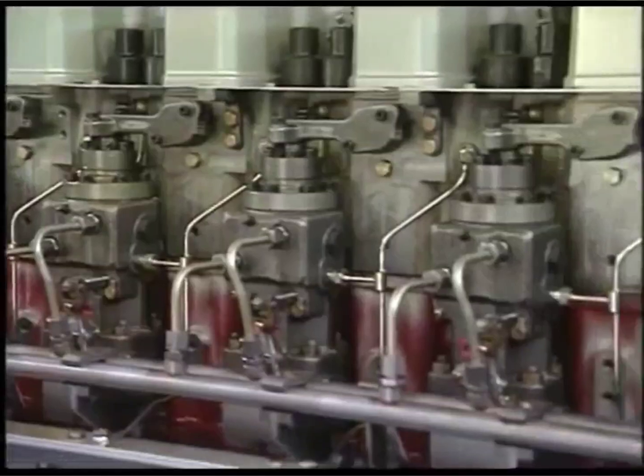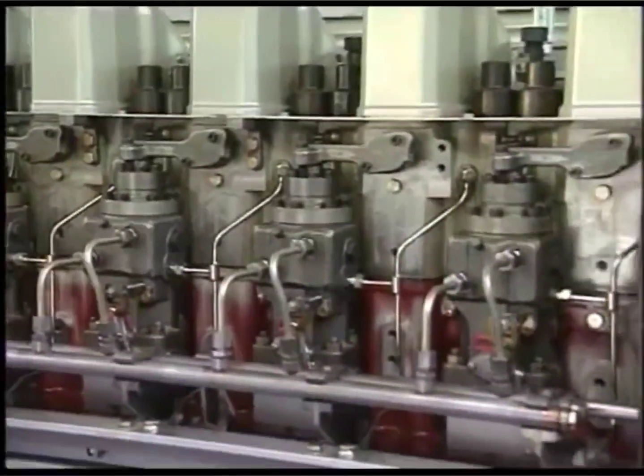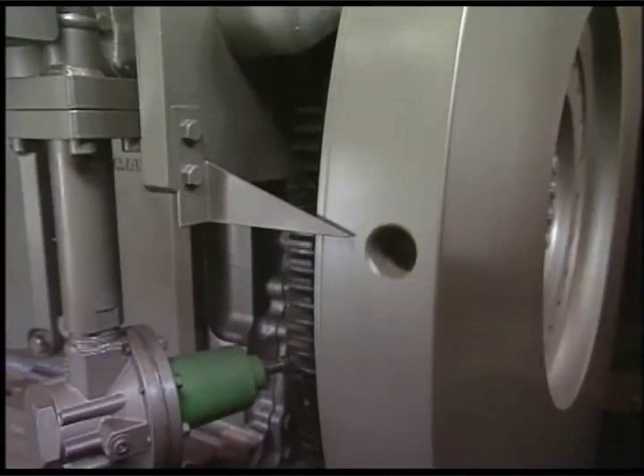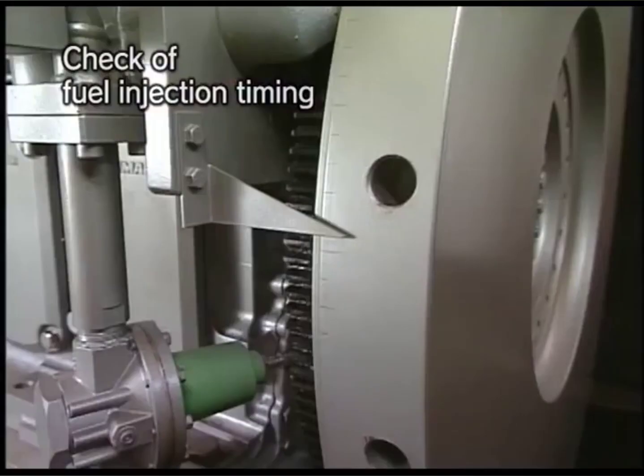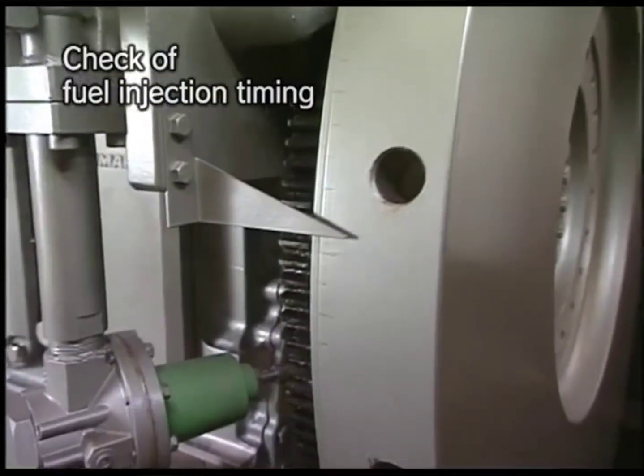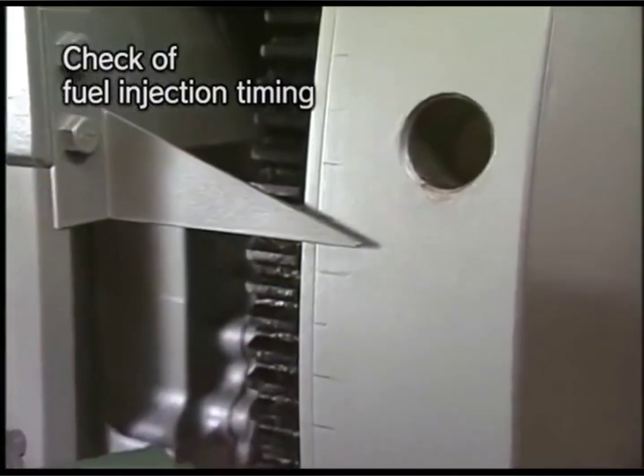Check the injection timing as the following procedure. Turn the flywheel and align the marked off line on the body of fuel injection pump with fit on the plunger guide. The scale graduation pointed out by the flywheel pointer at this time indicates the fuel injection timing.